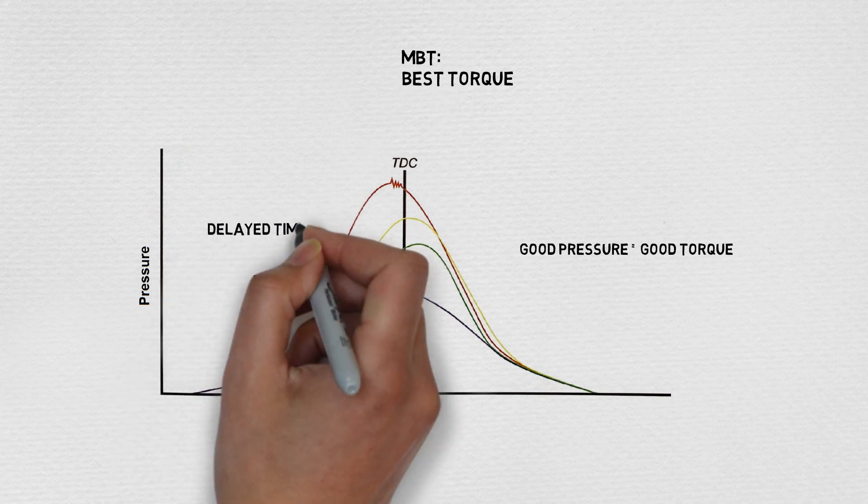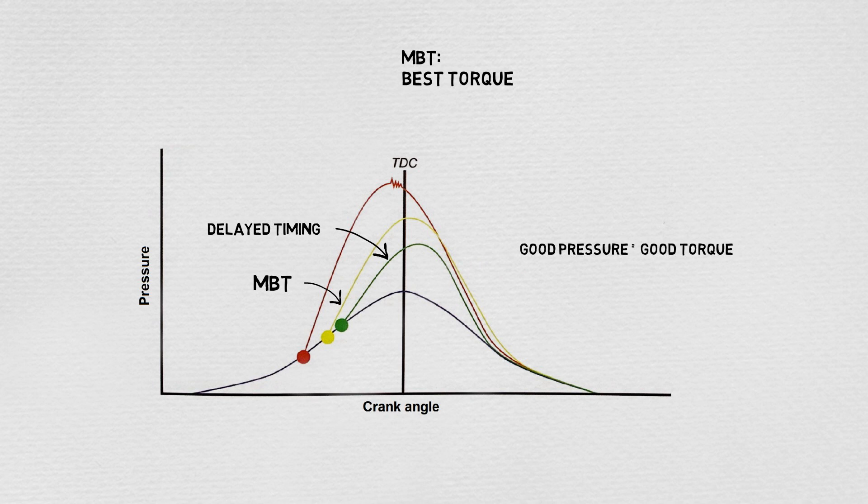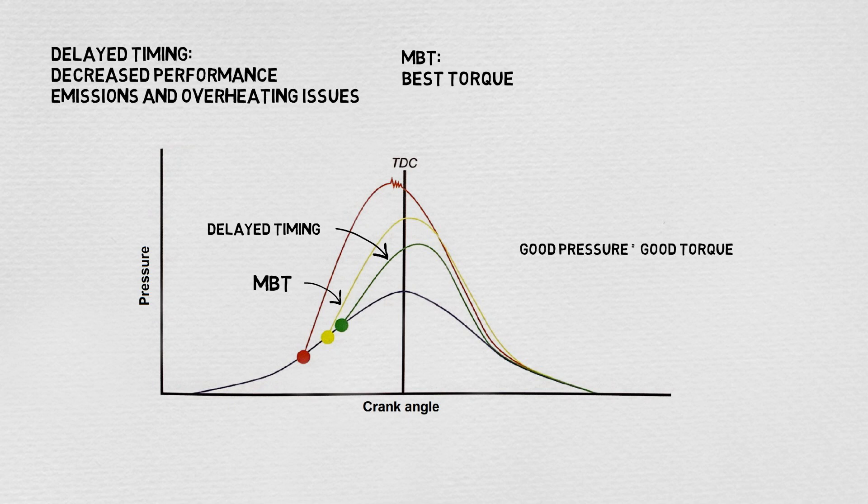If ignition starts too late in the cycle, the piston can literally run away from the expanding explosion. This is especially inefficient for power performance since the build pressure is wasted, but it also creates catalyst overheating and higher emission problems since less of the combustion occurs inside the cylinder.